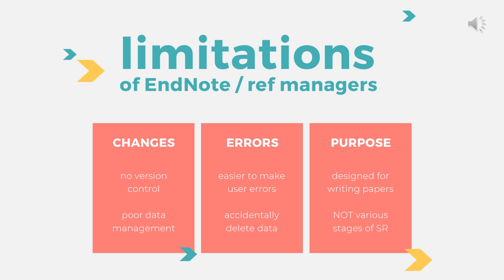Secondly, it's easier to make user errors. You might accidentally delete data or lose a reference. From my own experience using groups, I know how easy it can be to click 'move to trash' instead of 'remove from group'. Finally, although software such as EndNote are called reference managers, they are built for keeping track of references in the paper you're writing or your thesis, not for working through the various stages of a systematic review.